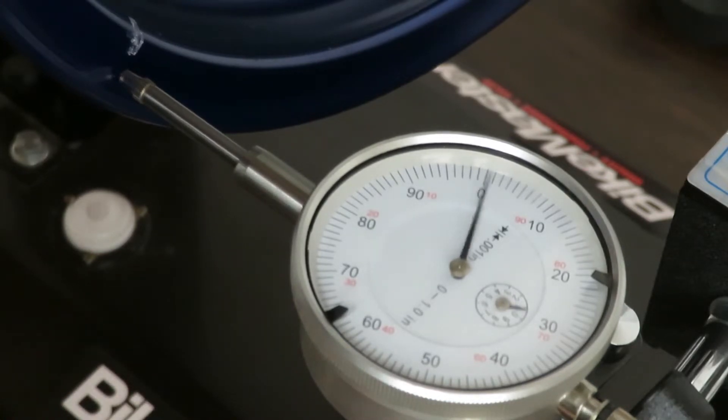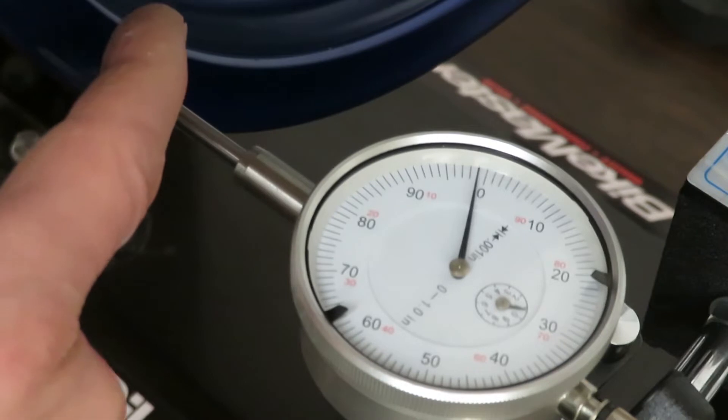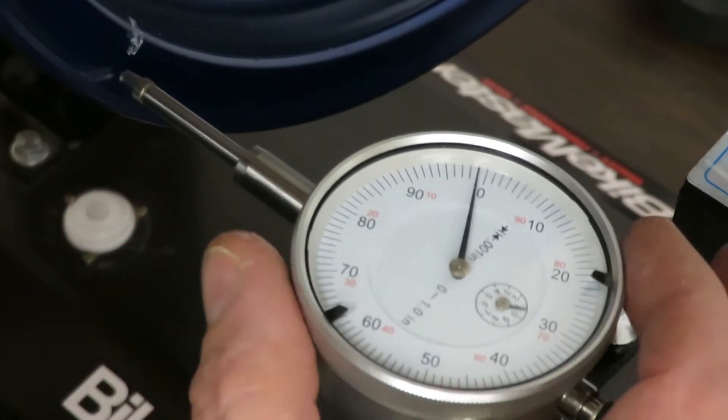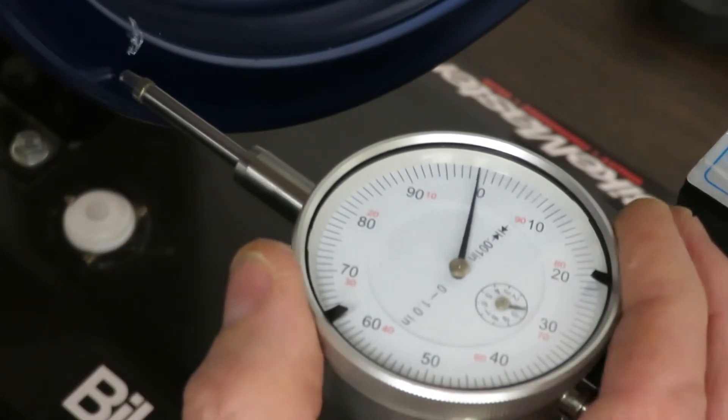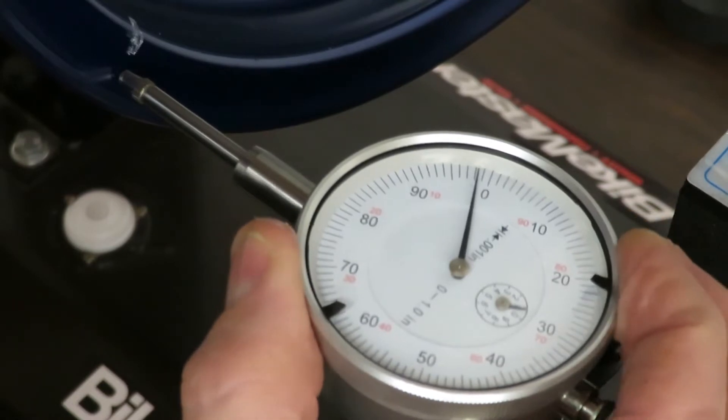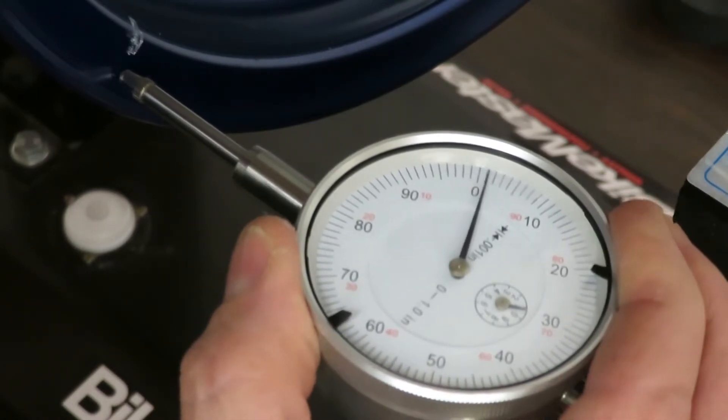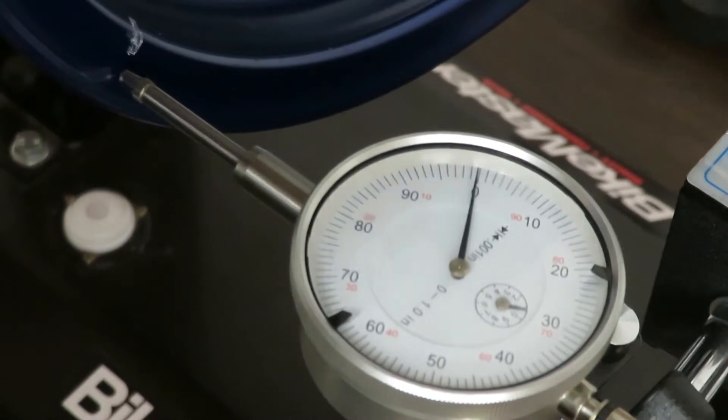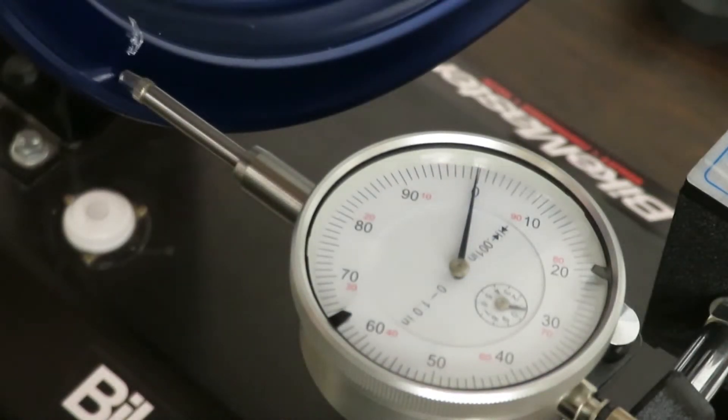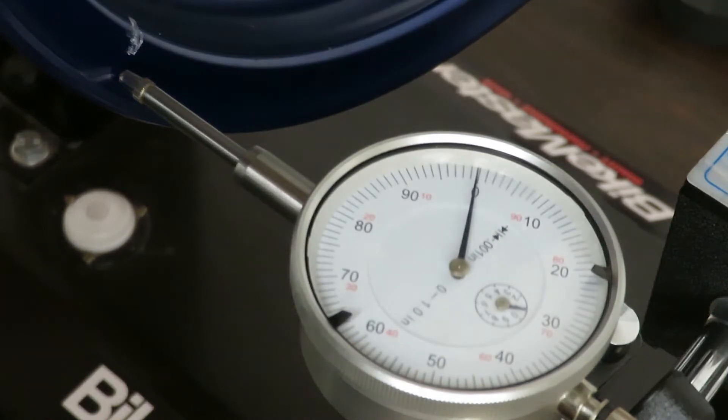You mark a spot on the wheel as we did here with some chalk. There should be a way to spin the dial on the dial gauge to adjust the needle to point to zero. And once you have that set up, just start spinning the wheel slowly.